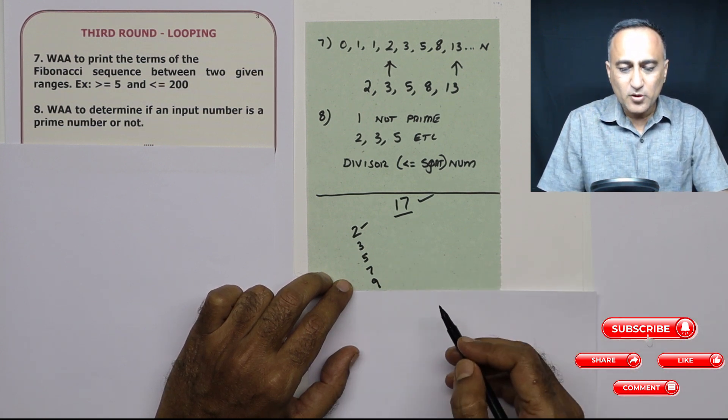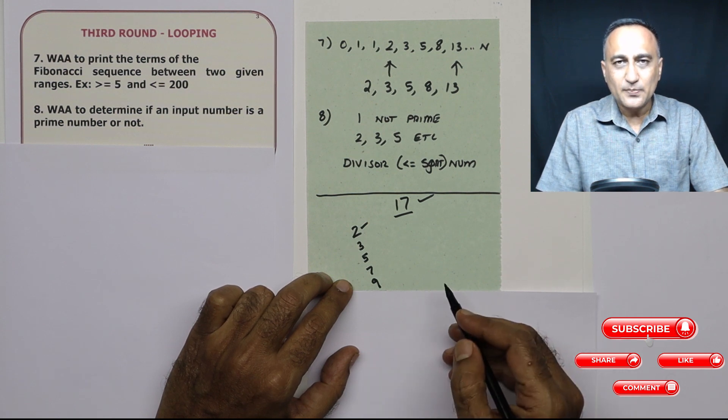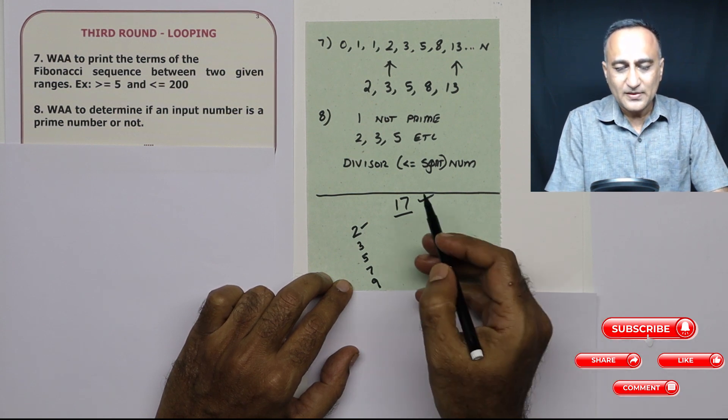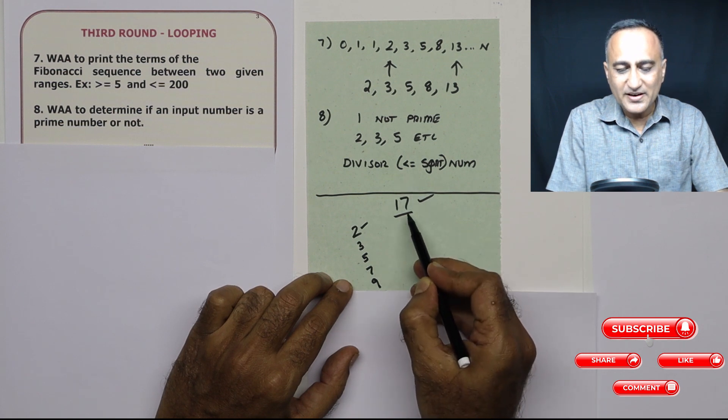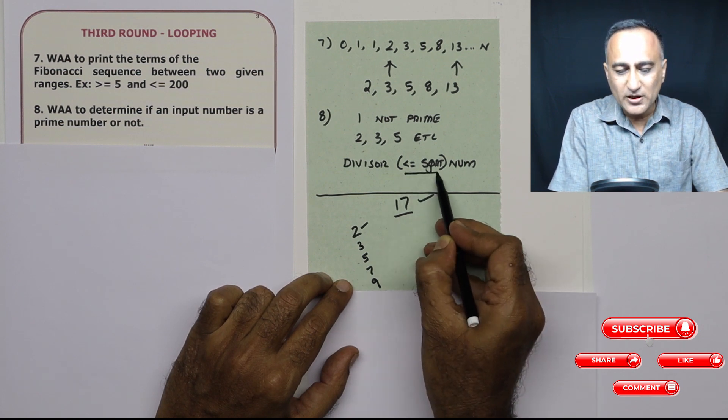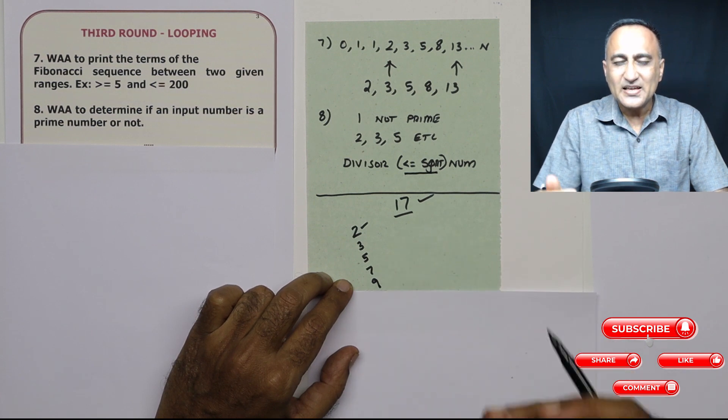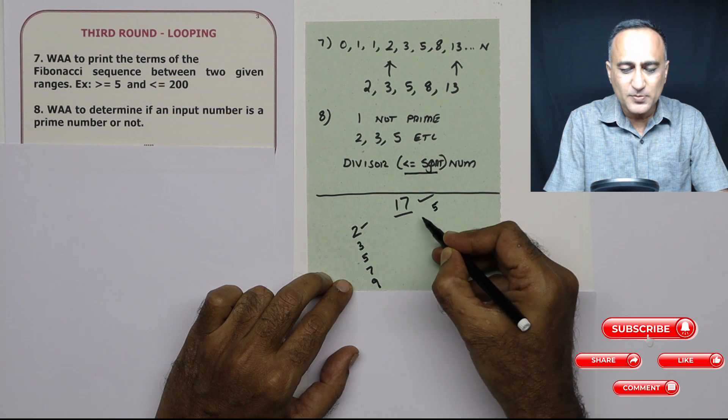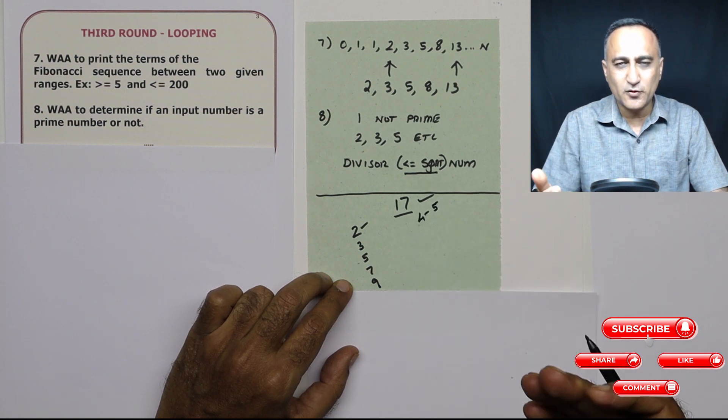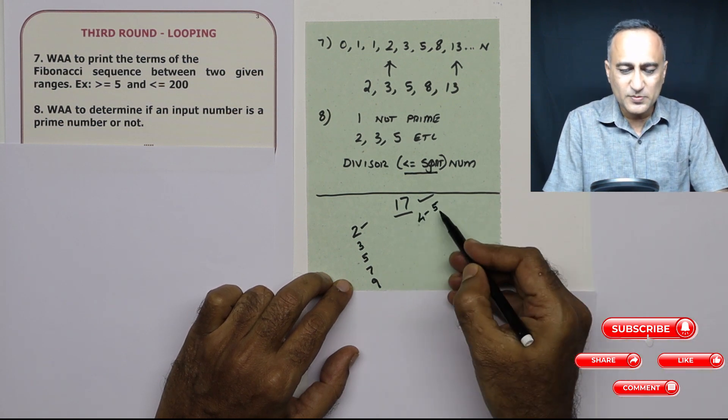The square root of 17 is approximately five. It's between four and five because four fours are 16, five fives are 25. So there is no point in trying to check any number beyond five which can divide 17.